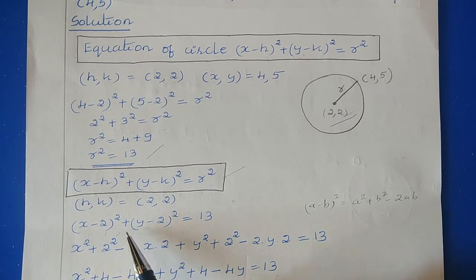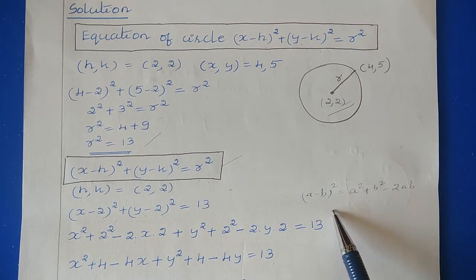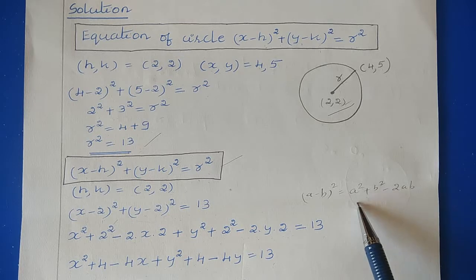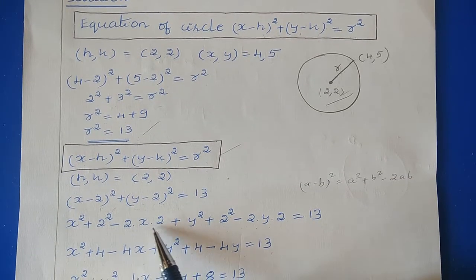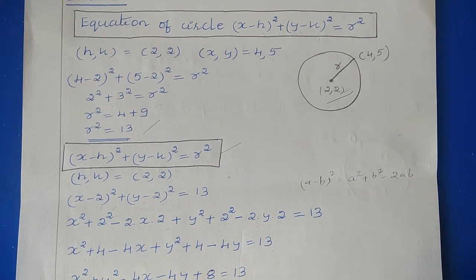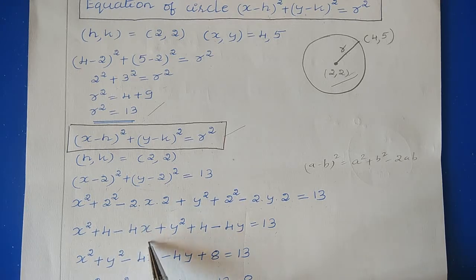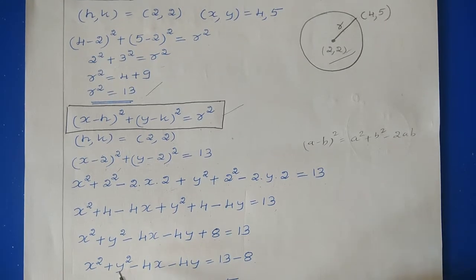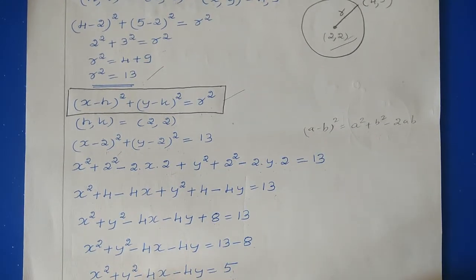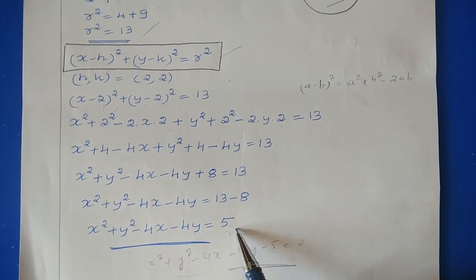We get (x − 2)² + (y − 2)² = 13. Expanding using (a − b)² = a² + b² − 2ab, we get x² + 4 − 4x + y² + 4 − 4y = 13. So 4 + 4 = 8, and 13 − 8 = 5. The final equation of the circle is x² + y² − 4x − 4y − 5 = 0.